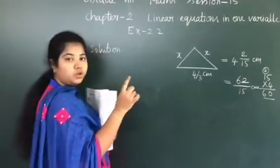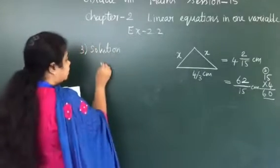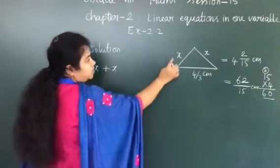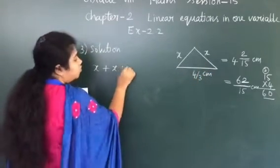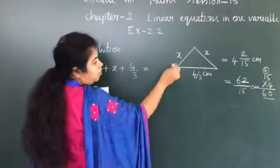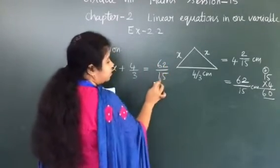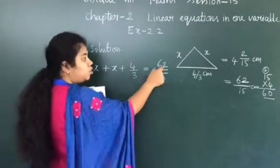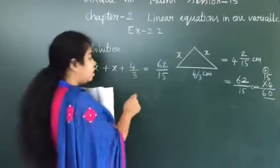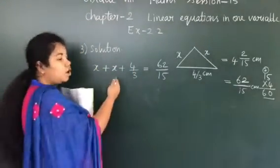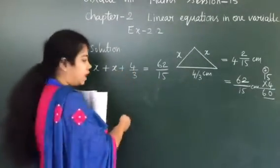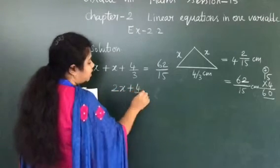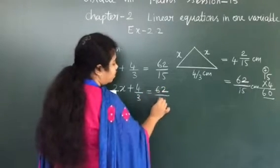Perimeter means adding all three sides. So the equation is: x plus x plus 4/3 equals 62/15. This is the formula — side 1 plus side 2 plus side 3 equals the given perimeter. Now we are going to solve and find the value of x. x plus x gives 2x, so 2x plus 4/3 equals 62/15.